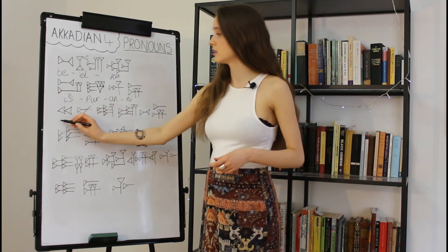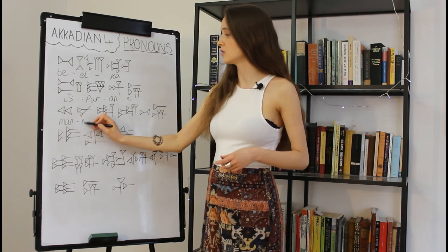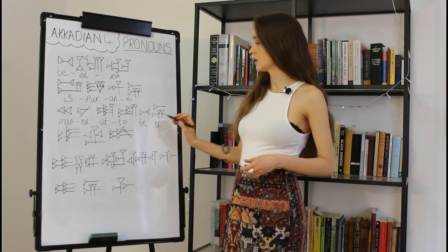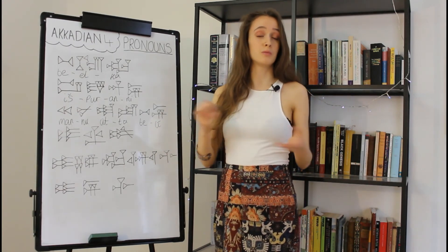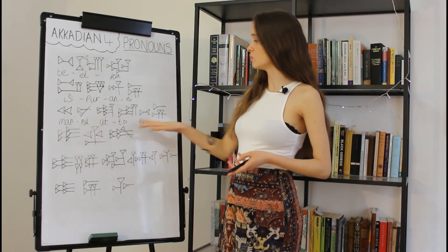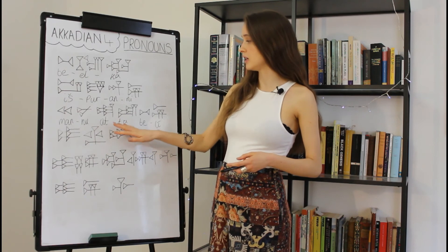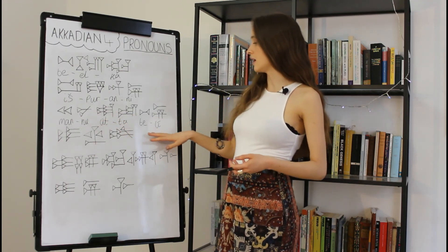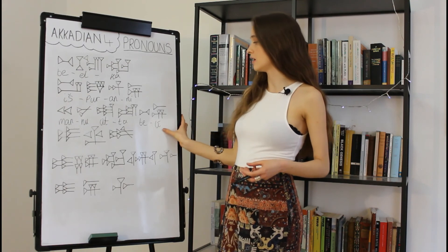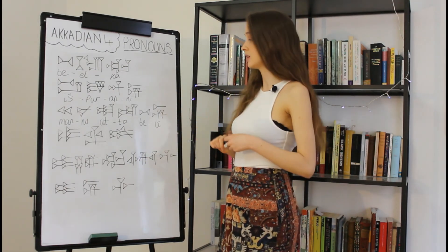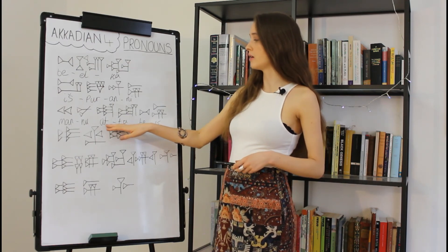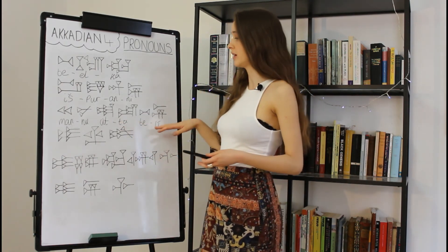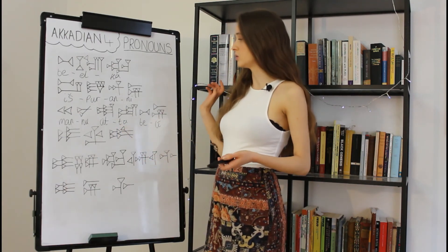Moving on to our second example, we have the signs for 'mannu' and 'atta bēlī.' This is actually a line from the Tale of the Poor Man of Nippur, which some of you might be familiar with. It reads 'who are you, my lord?' — 'mannu' is the interrogative 'who,' plus 'atta,' the second masculine singular nominative independent pronoun ('you'), and then 'bēlī' from 'bēlum' with the first common singular genitive possessive suffix meaning 'my lord.' Here the independent nominative pronoun functions in place of a verb in a nominal phrase, implying 'to be.'